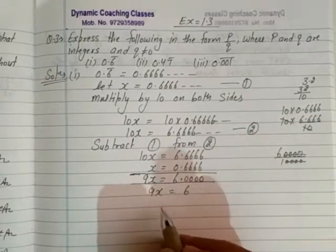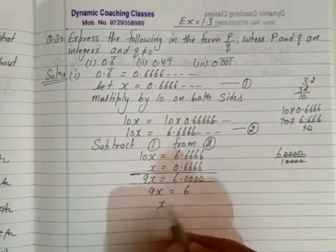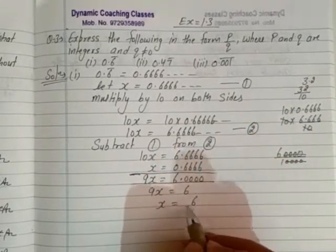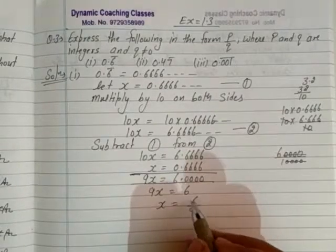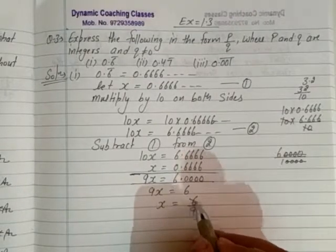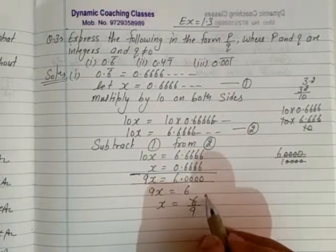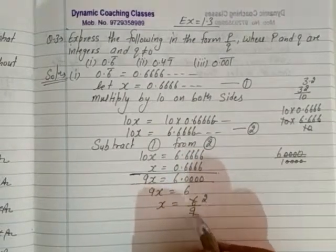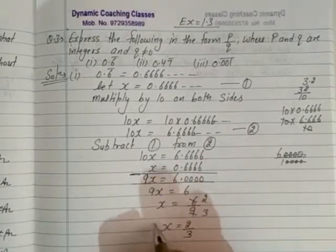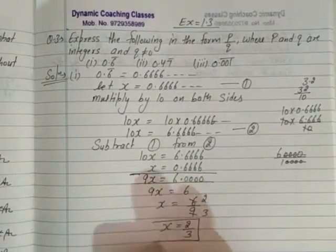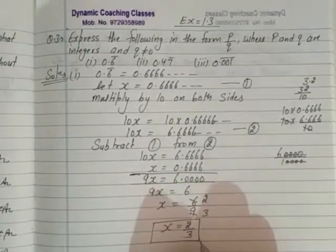So what is the value of x? x equals 6 by 9. And if we simplify it by dividing both numerator and denominator by 3: 6 divided by 3 is 2, and 9 divided by 3 is 3. So the value of x is 2 by 3. That is the answer.